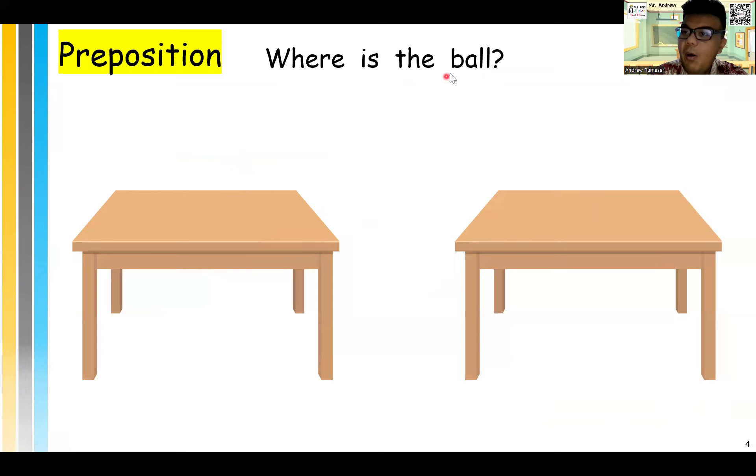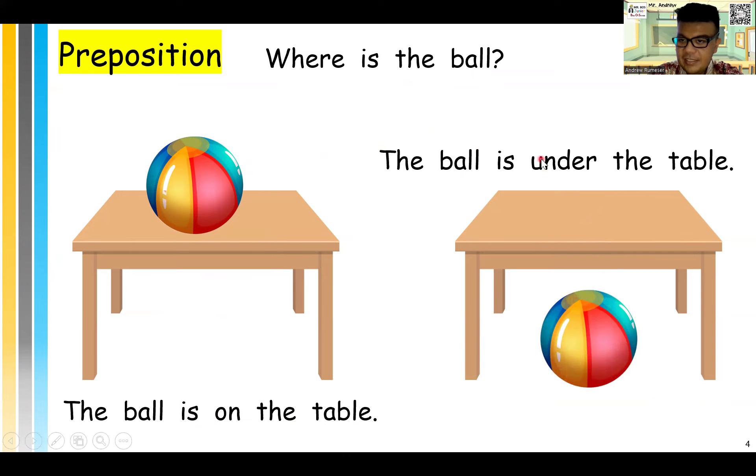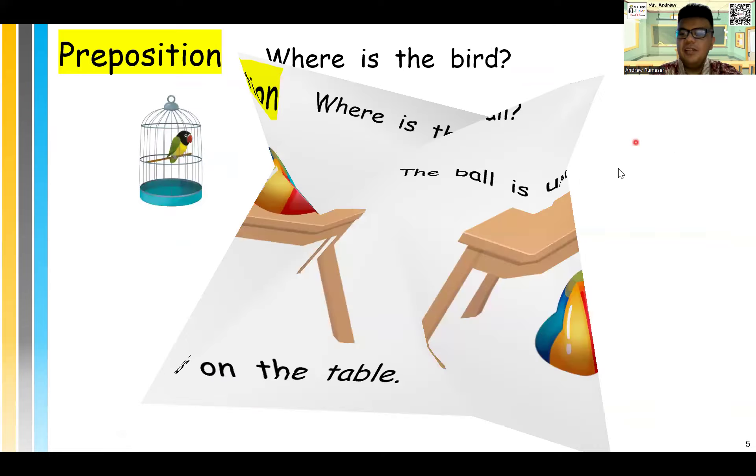Next, where is the ball? Where is the ball? If it's like this, the ball is in, on, or under, kids? It's on the table. On. The ball is on the table. That's right. What if it's like this? The ball is down here, we say, it's the ball is under. Under. That's right. Under the what? Under the table. Excellent.